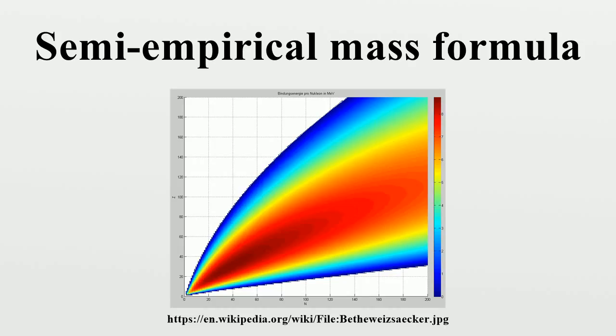Pairing term: The term δ(A,Z) is known as the pairing term. This term captures the effect of spin coupling. It is given by δ(A,Z) = +aP·A^(-1/2) for even Z and even N, 0 for odd A, and -aP·A^(-1/2) for odd Z and odd N. Due to the Pauli exclusion principle the nucleus would have a lower energy if the number of protons with spin up were equal to the number of protons with spin down. This is also true for neutrons. Only if both Z and N are even can both protons and neutrons have equal numbers of spin up and spin down particles.